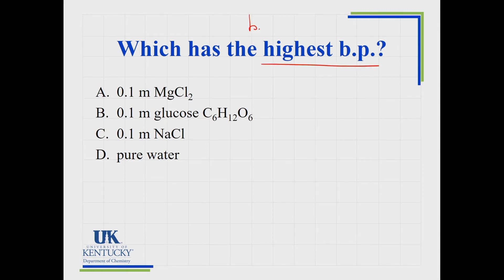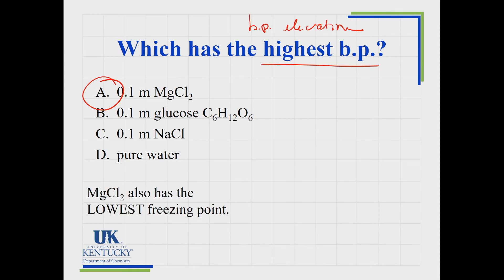Once you know which solution has the most particles, you can answer related questions. For boiling point elevation, the more particles, the higher the boiling point — so magnesium chloride has the highest boiling point. For freezing point depression, the one with the most particles also has the lowest freezing point. There are different ways we could ask the same underlying question.